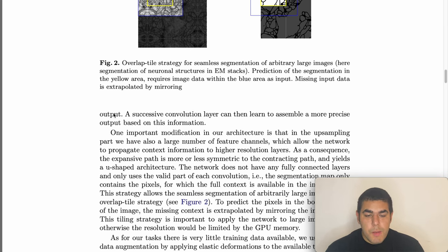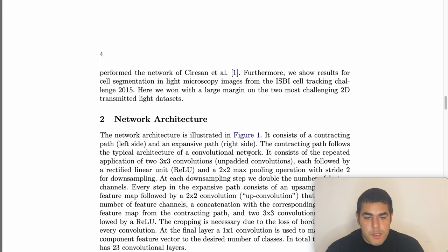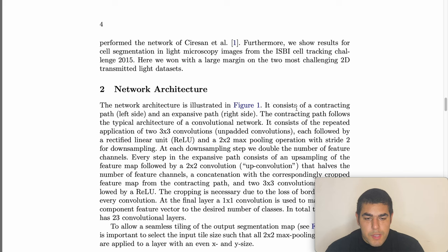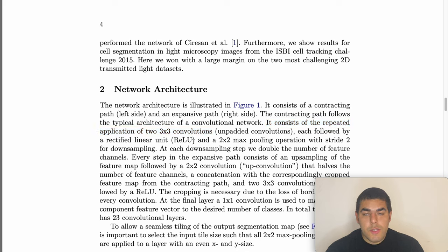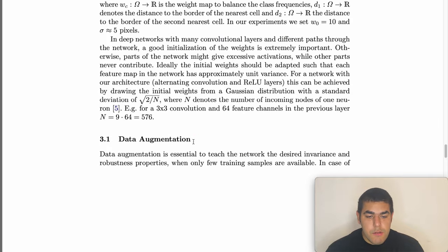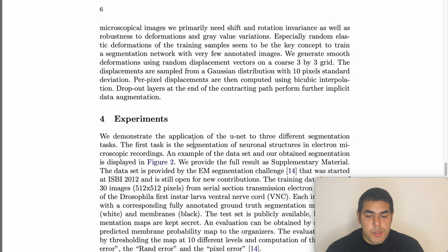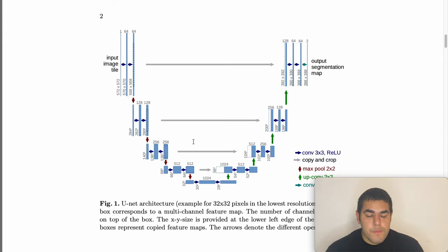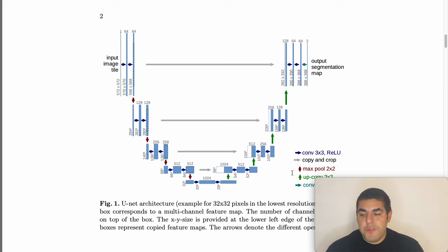Looking at the paper details, we have upsampling with feature channels and resolution channels. The architecture consists of repeated application of 3x3 convolutions followed by ReLU — we will call it double convolution, and you will see it during the coding. There are some training details and data augmentation mentioned, but the key thing to keep in mind is the main architecture diagram.